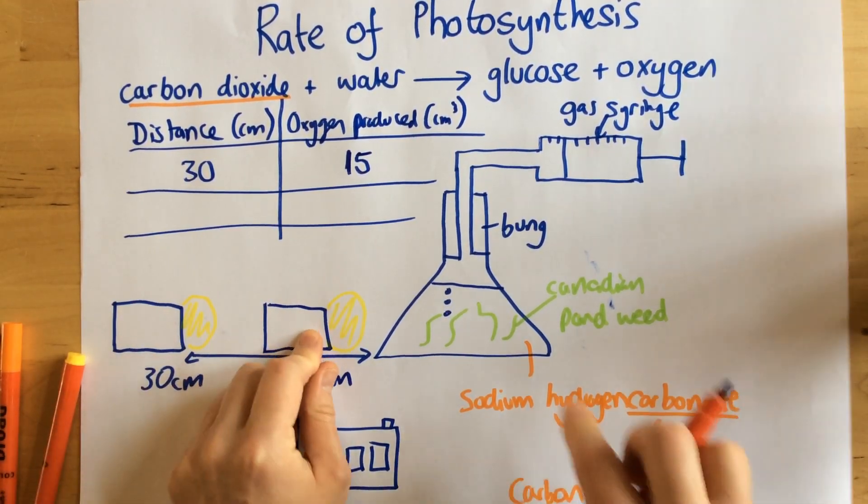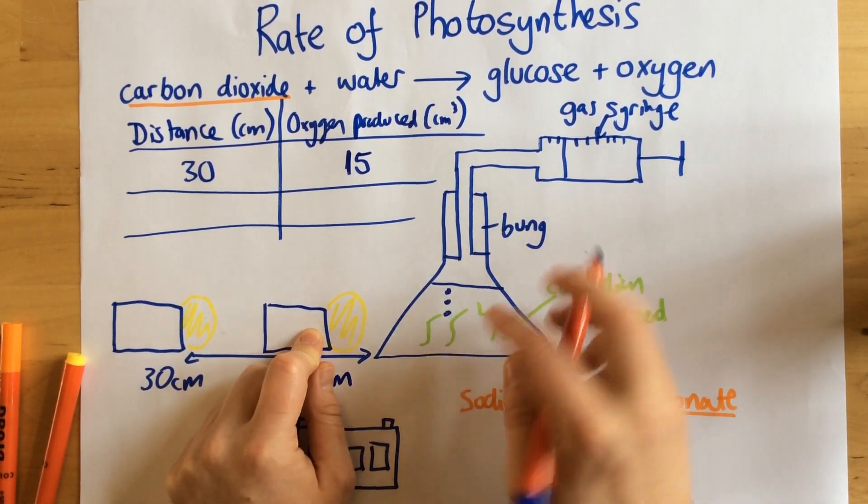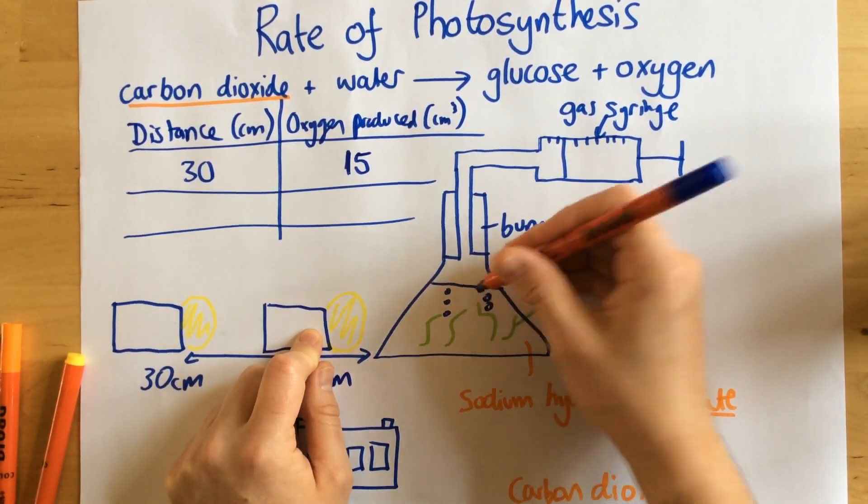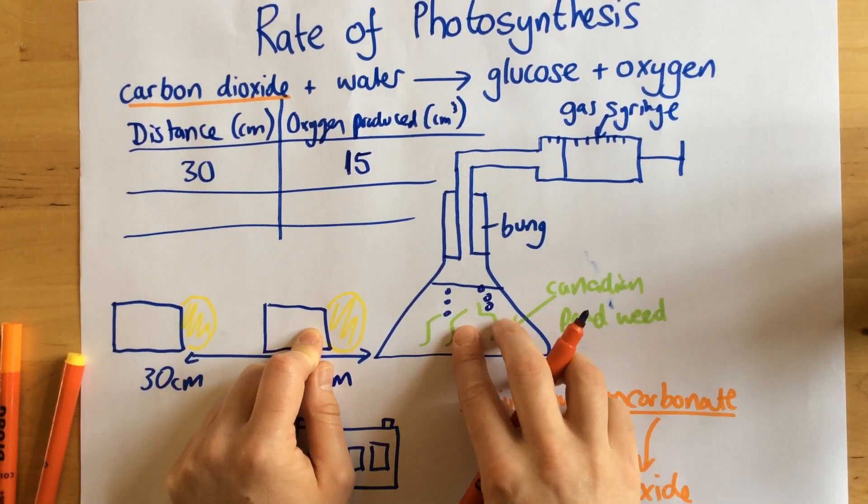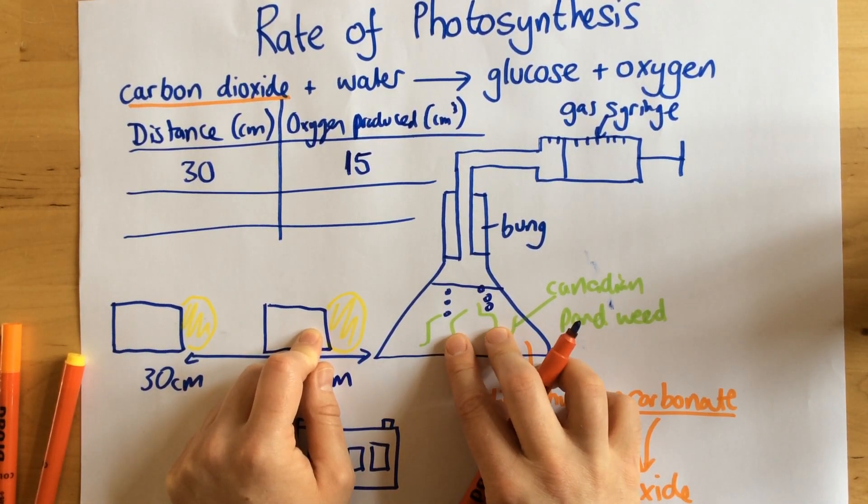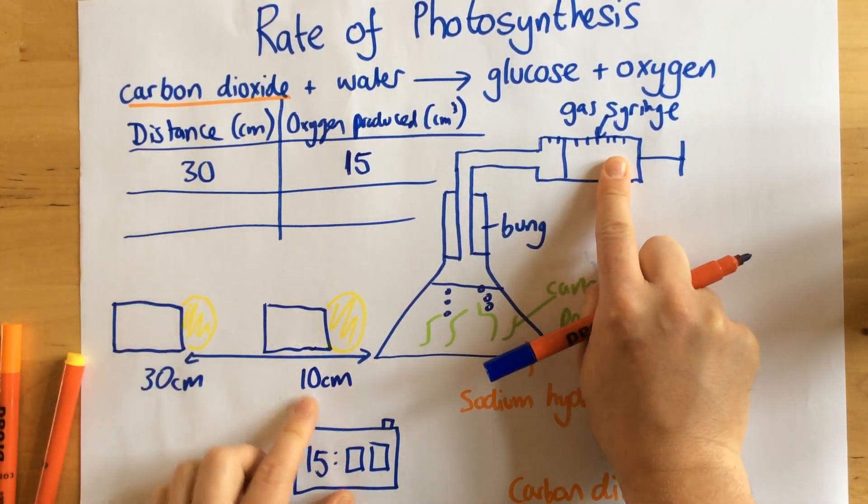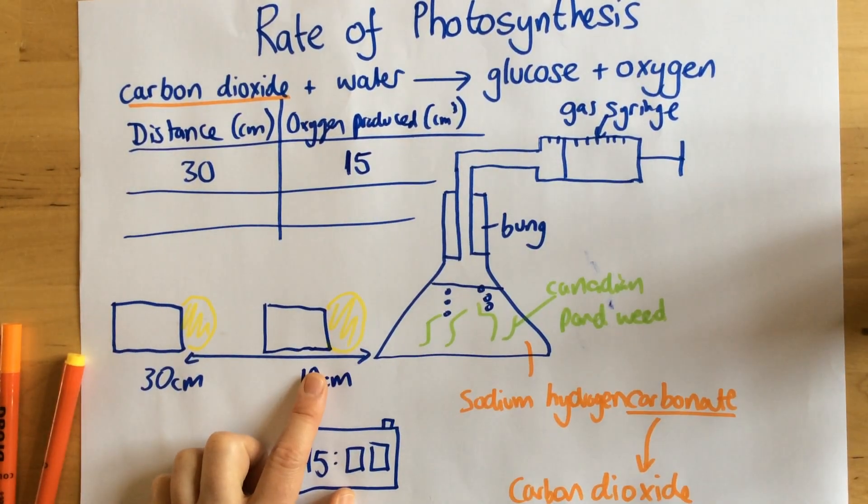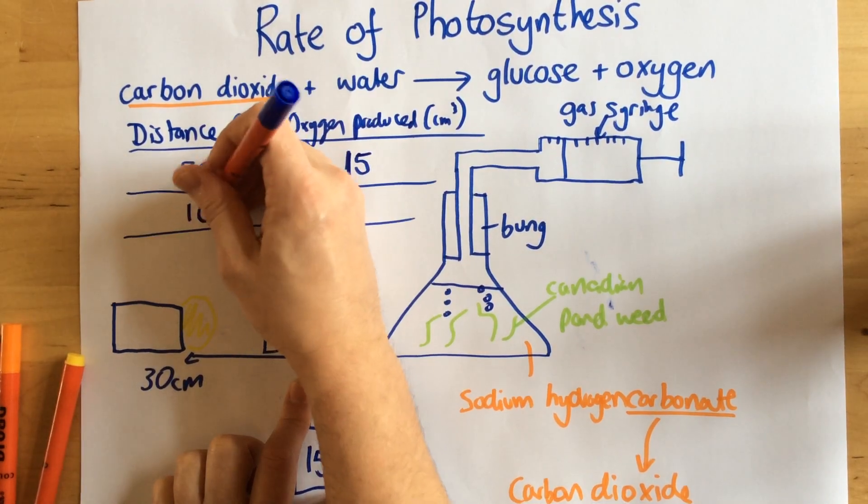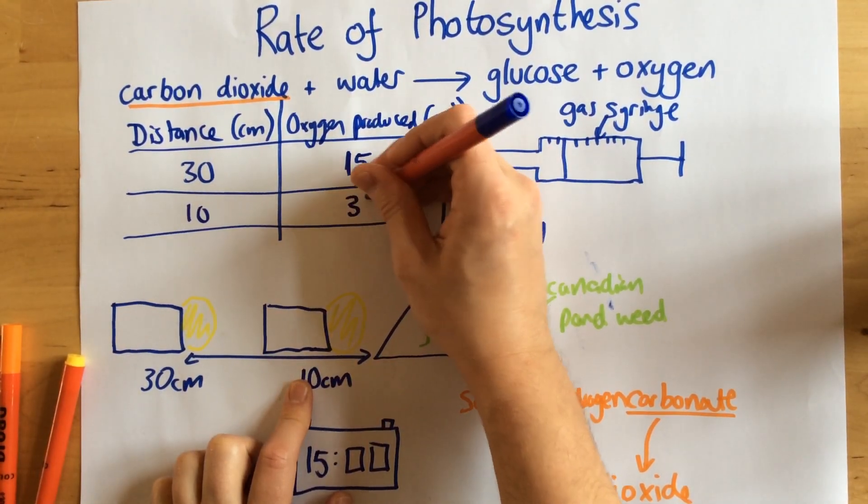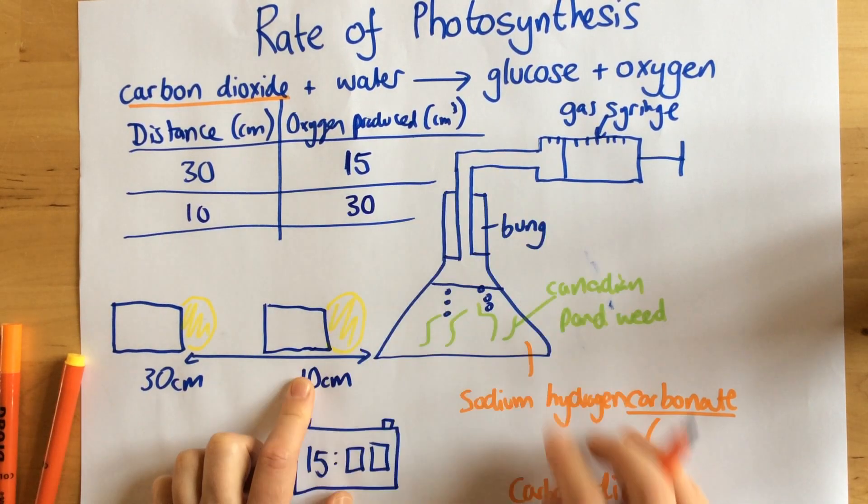Now the closer the light, the greater the rate of photosynthesis. So we're going to be producing more oxygen per minute, or more oxygen per second. So as you can see, the oxygen is going to go up here. And if we had the lamp closer, we'd produce more oxygen. So let's say at 10 centimeters away, we produced 30 centimeters cubed, because we're going to be producing more oxygen.